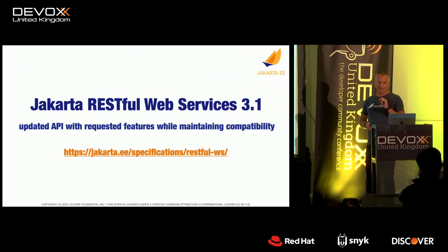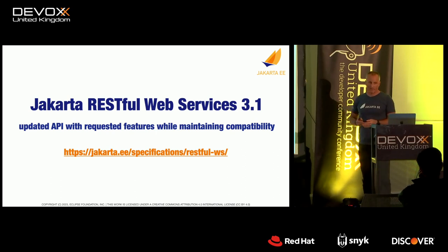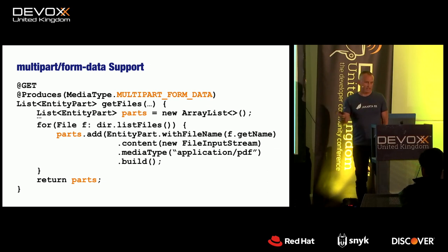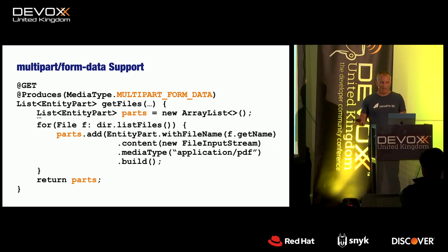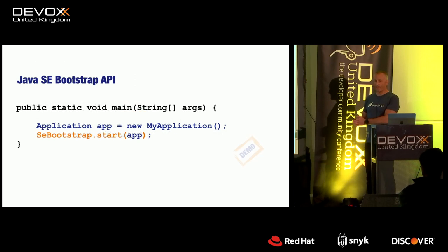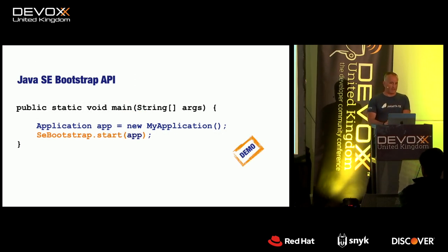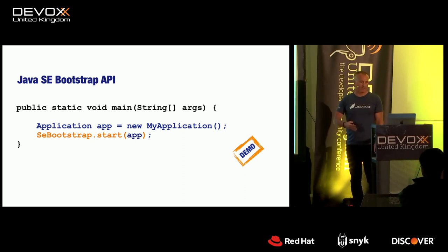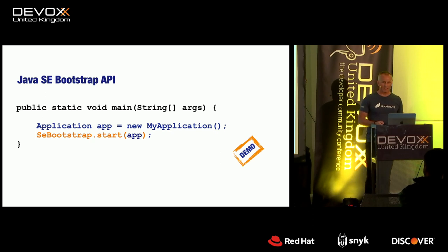RESTful Web Services was planning a backwards-incompatible 4.0 release, but they backed off and did a 3.1 to maintain compatibility for Jakarta EE10. For Jakarta EE11 there will most likely be a 4.0 that will break things. One thing they added — community has asked for this a long time — is support for multipart form data. You may have done this in a proprietary way with RESTEasy or Jersey before, but now you can do it in a standard way. They also added the Java SE Bootstrap API: the possibility to create a RESTful Jakarta application without an application server, bootstrapped directly and distributed as a JAR file.